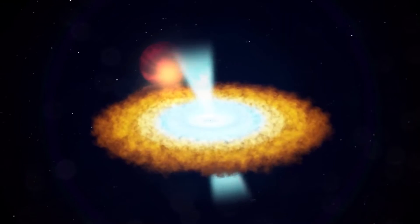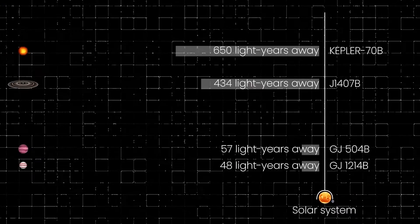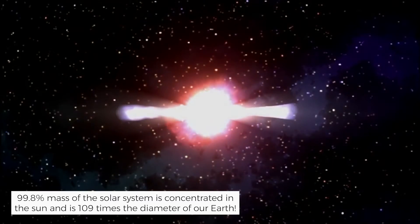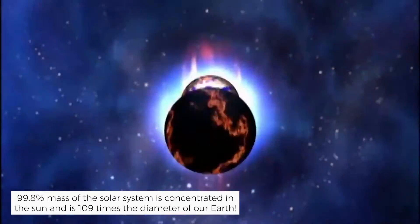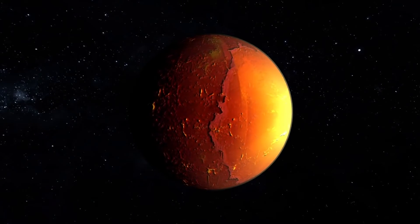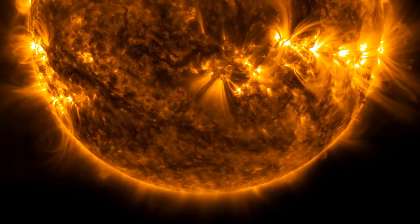Now talking about the sun, it is the heart of our solar system and accounts for the largest planet in the solar system. 99.8% mass of the solar system is concentrated in the sun and is 109 times the diameter of our earth. Fun fact, you could fit in about 1 million piles of earth in the sun.